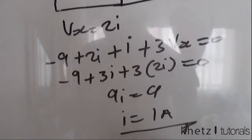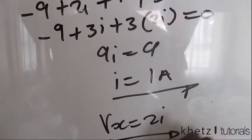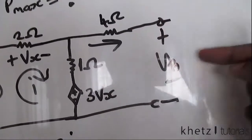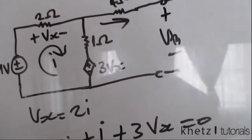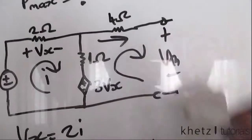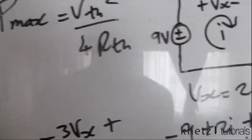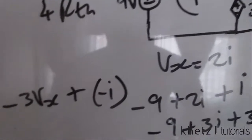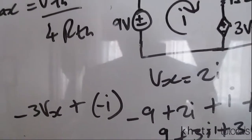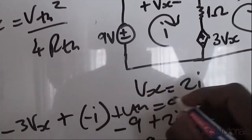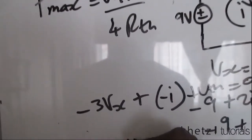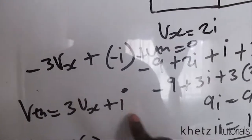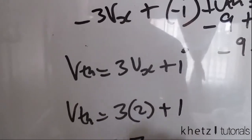Now that i = 1 A, vx equals 2i equals 2 × 1 equals 2 volts. To find V_th, we go around the V_th loop: negative 3·vx plus the voltage across the 1-ohm resistor (negative i, since we're going opposite to i) plus V_th equals 0. So V_th equals 3·vx plus i equals 3×2 plus 1 equals 7 volts.